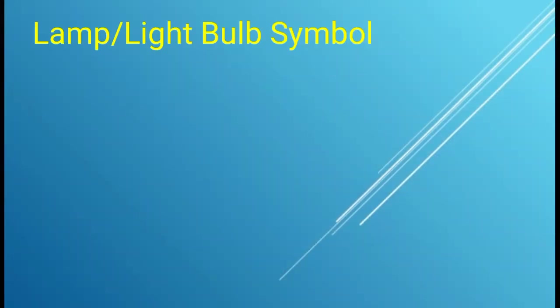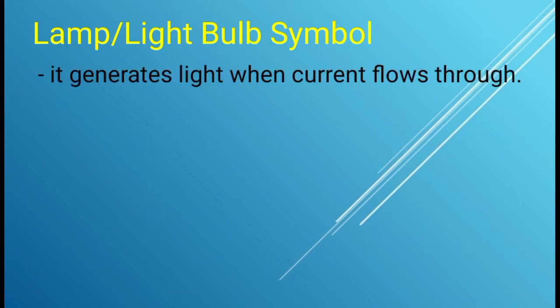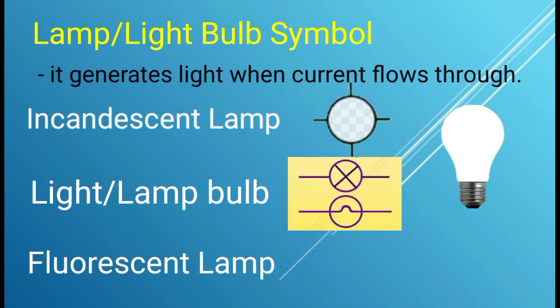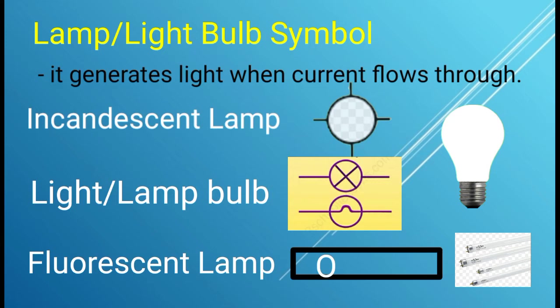Next, we have the lamp or light bulb symbols. Lamp generates light when current flows through. We use this device to light up our rooms especially during night time. One type of this is the incandescent lamp and the symbol is like this. We have also the fluorescent lamp, and we usually use the symbol of incandescent lamp when we make or draw a diagram or plan.